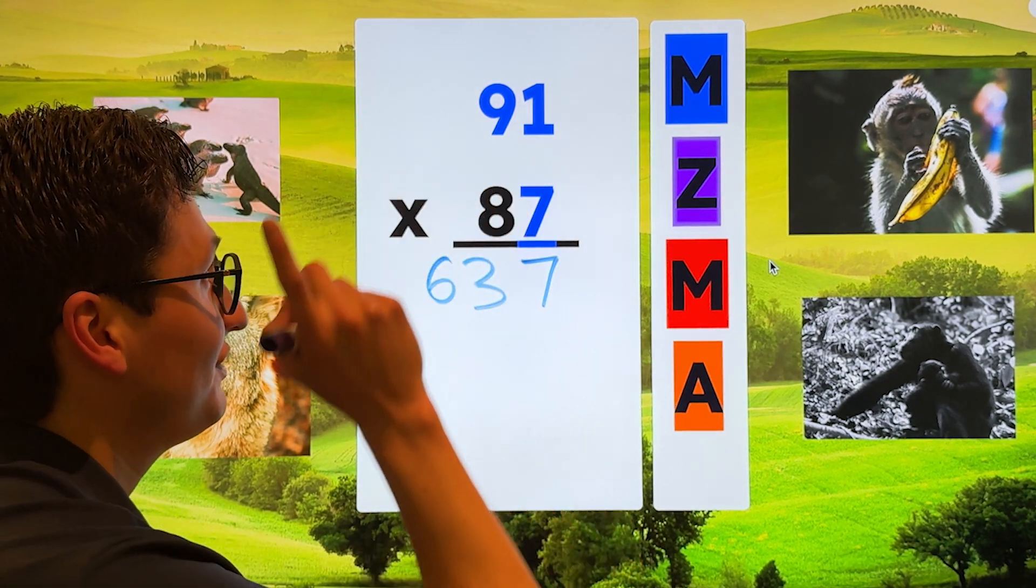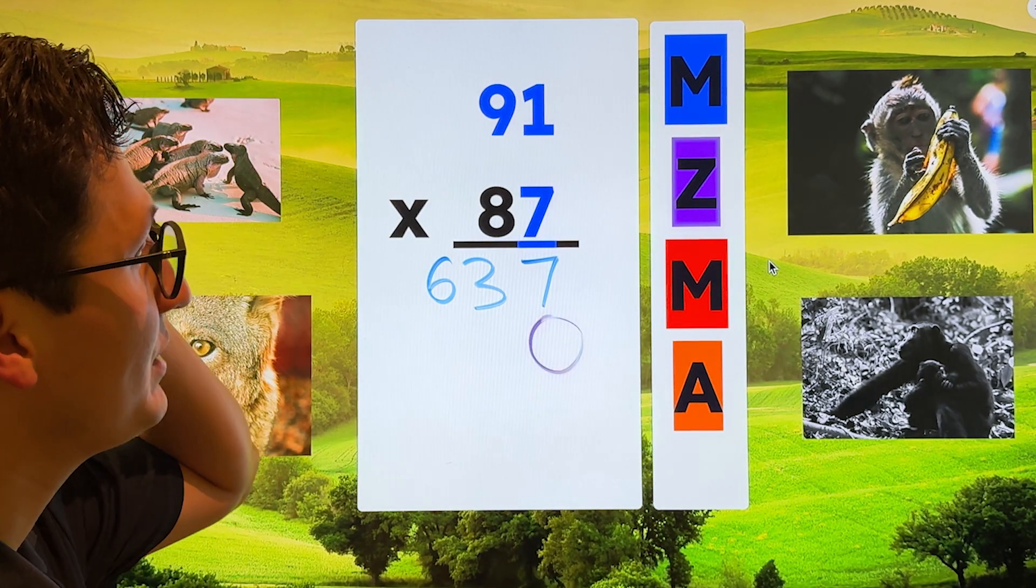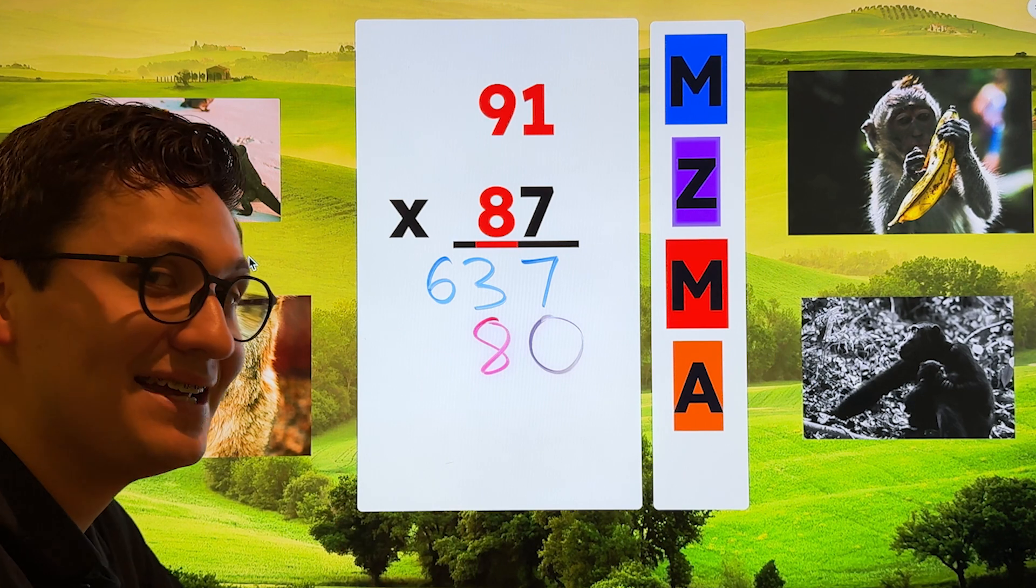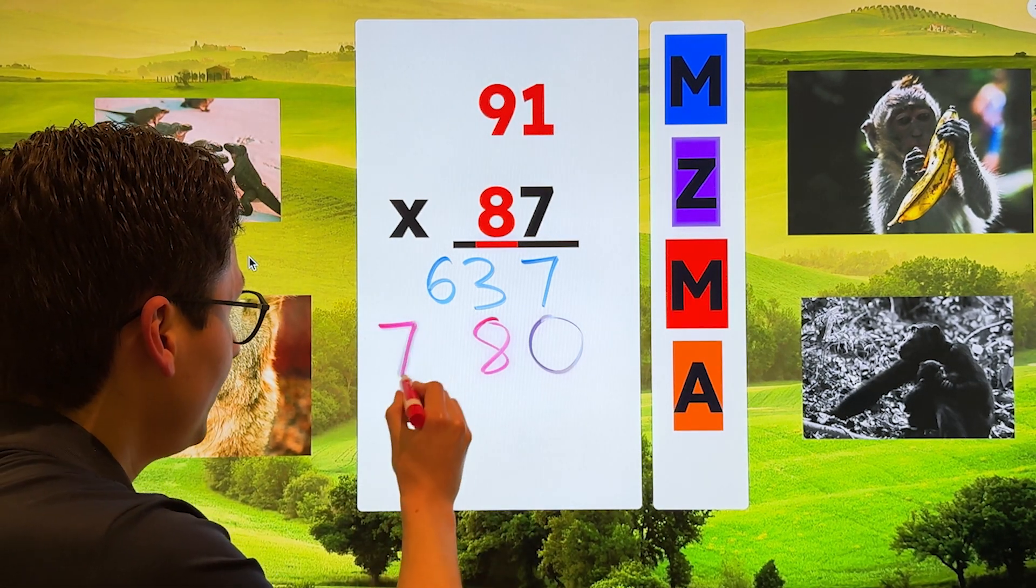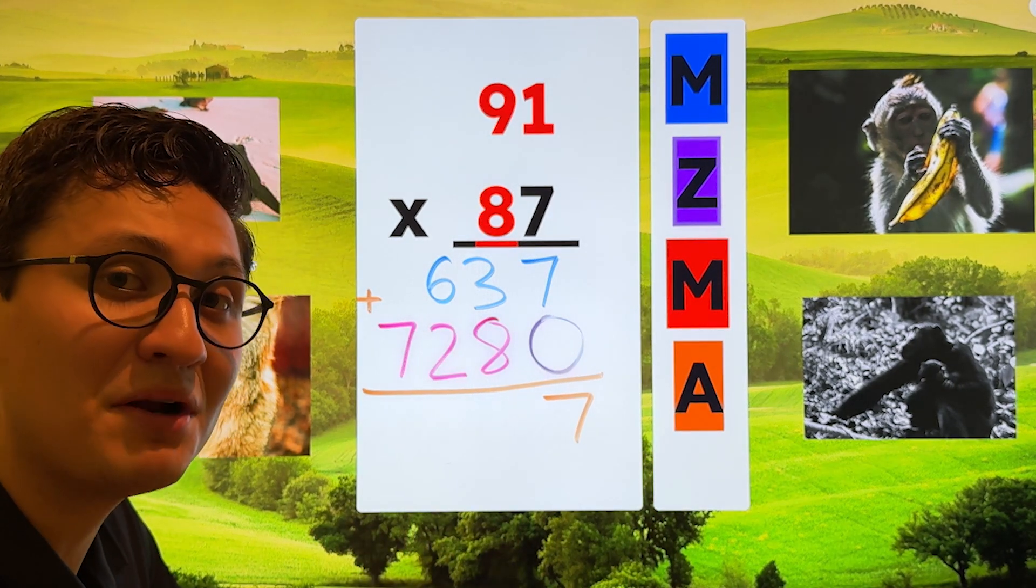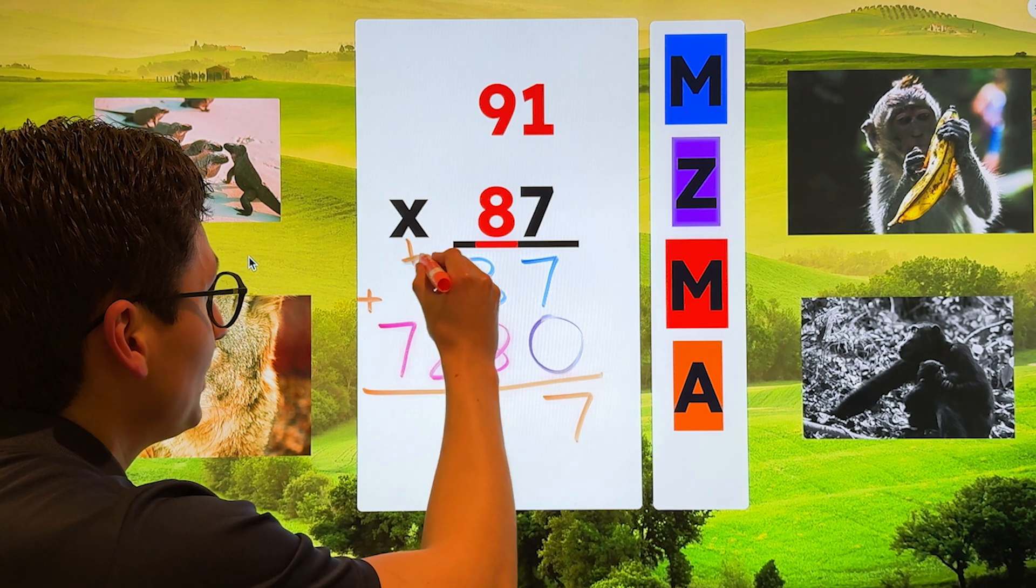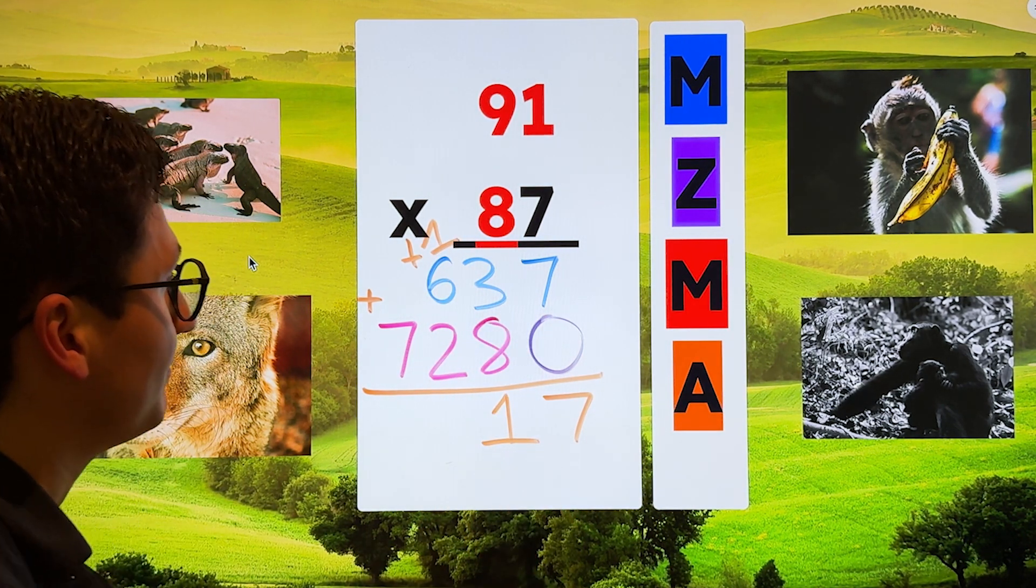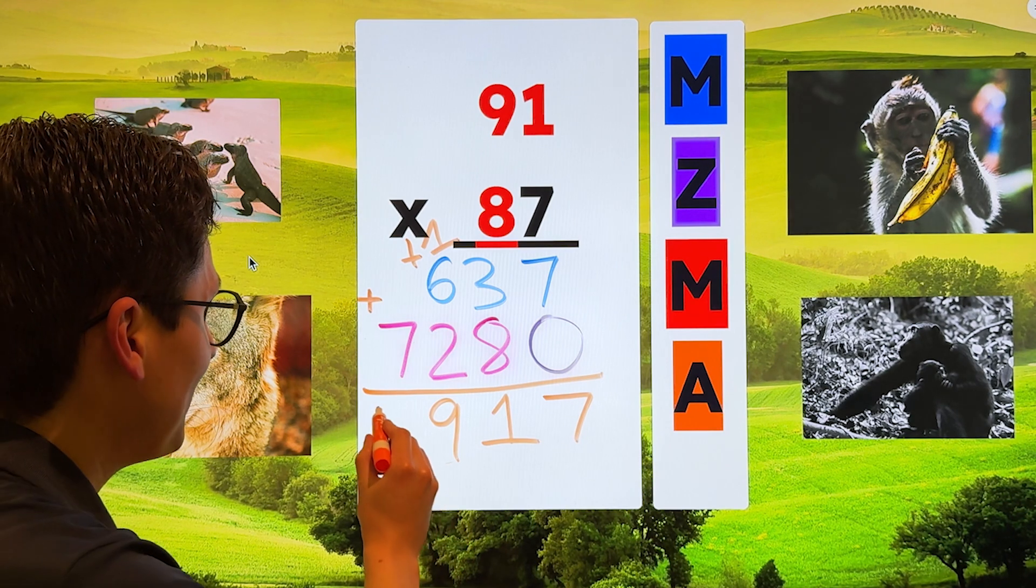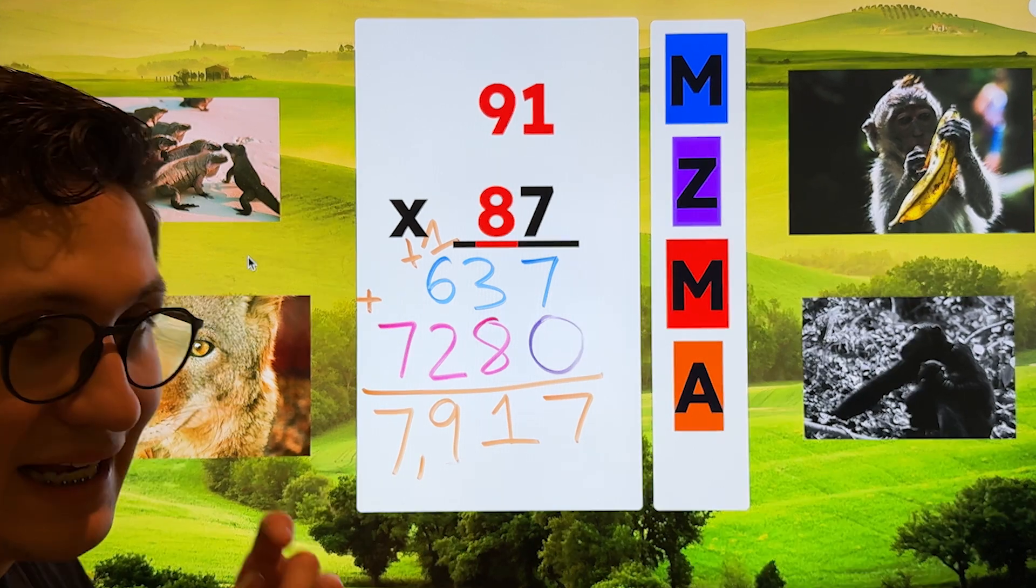Now that we're done with step one, we go to step two, which is to add a zero. And then we go to step three, which is to multiply. Eight times one is eight. Eight times nine is 72. Last but not least, add. Zero plus seven is seven. Eight plus three is 11. And because the number is 10 or greater, I have to regroup. So eight plus three is 11. I put the one up here and the other one down here. Two plus six is eight plus one is nine. Seven plus zero is seven. So 91 times 87 is 7,917.